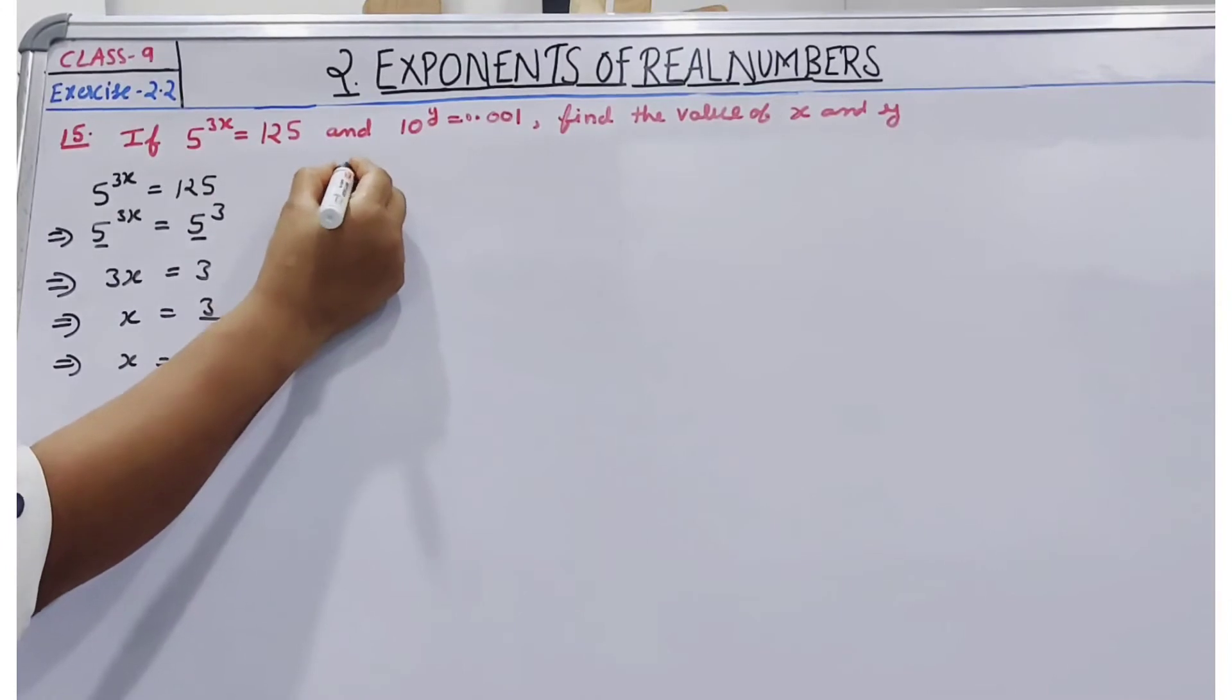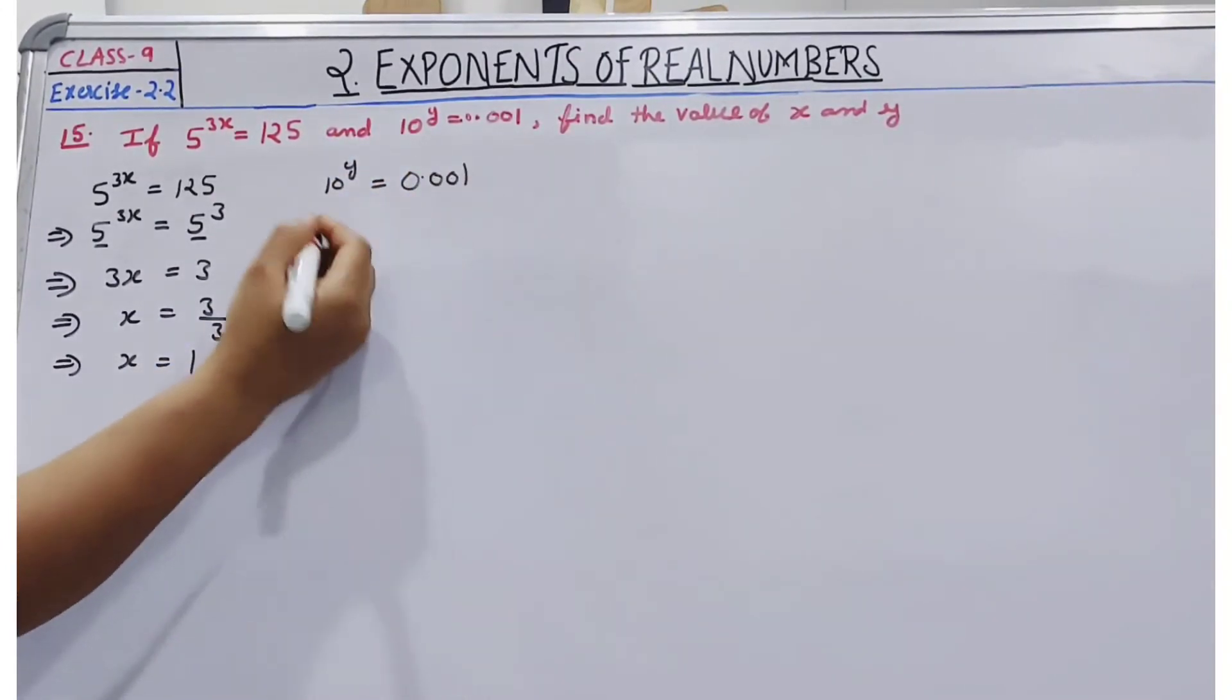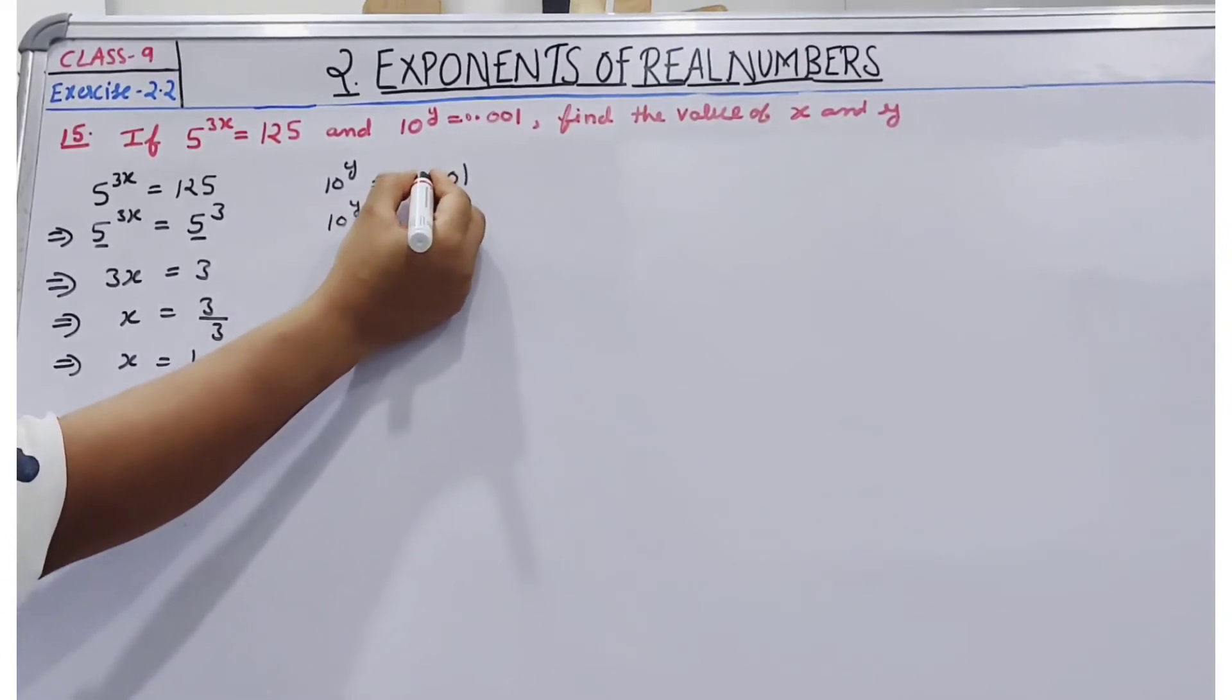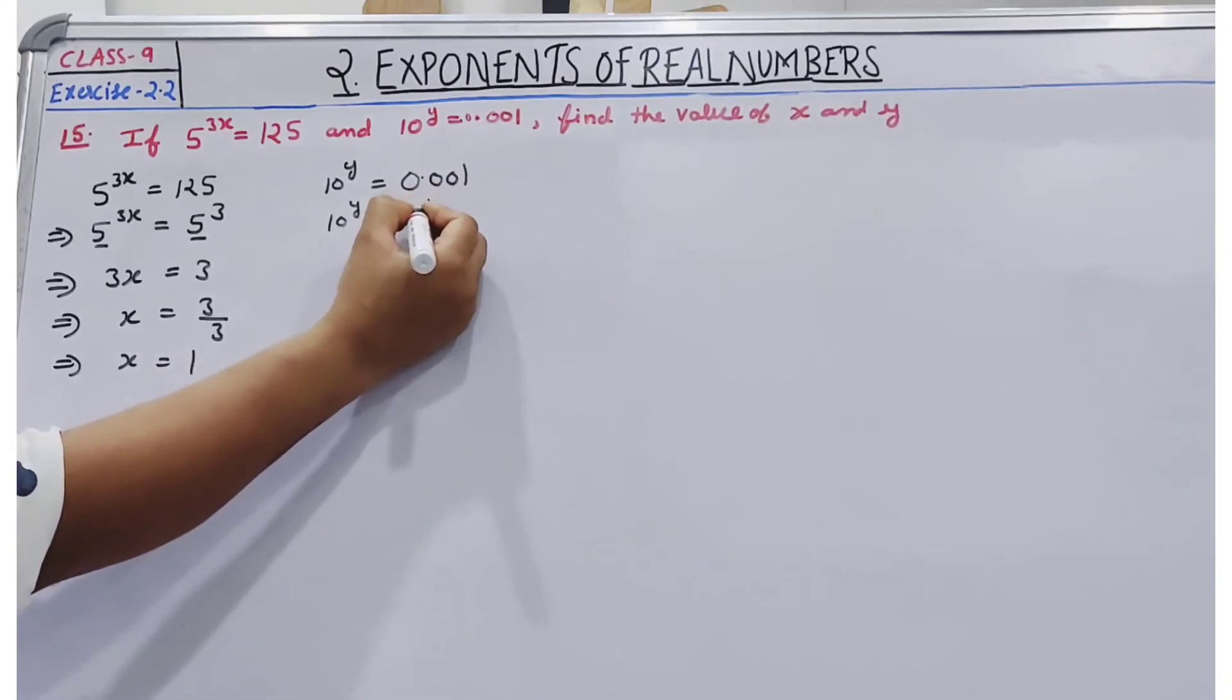Now, 10 to the power y is equal to 0.001. If we remove the decimal, how many places after the decimal? 1, 2, 3. So this becomes 1 divided by 1000.